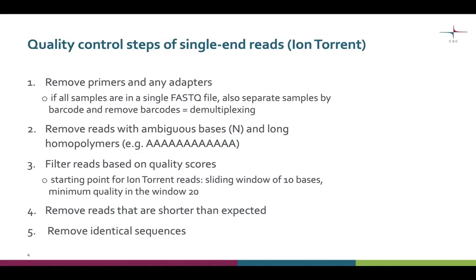Next, we want to filter the reads based on quality scores. For ion torrent sequence reads, a good starting point is to use a sliding window of 10 bases and a minimum quality in the window of 20. When the quality in the read drops below this threshold, the read will be trimmed at that point. Finally, we want to remove reads that are much shorter than expected, and we want to remove identical sequences.